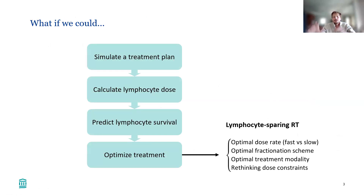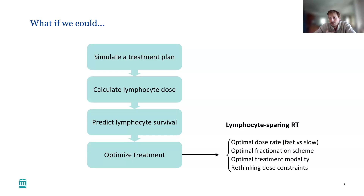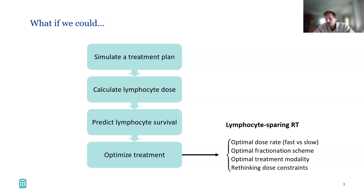The outlook of the project is: simulate the treatment plan, calculate the dose that lymphocytes receive, and based on that predict lymphocyte survival. Then use that to optimize the treatment — for example, looking at different parameters that radiation oncologists can adjust, such as dose rates, fractionation scheme, and treatment modalities like protons versus photons. You could think of lymphocytes as just another organ at risk and readapt those optimization constraints to reflect that.